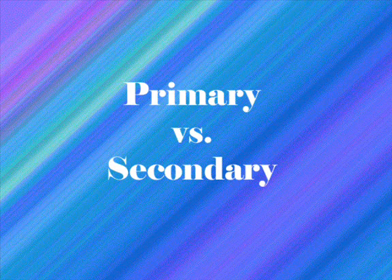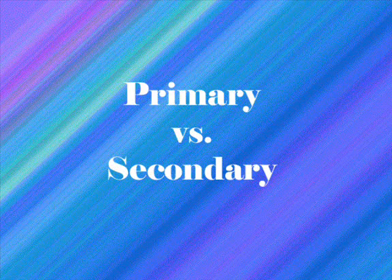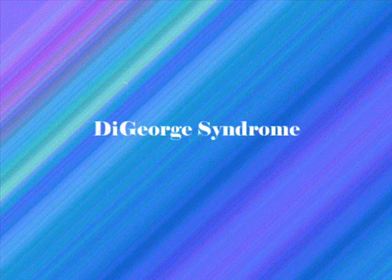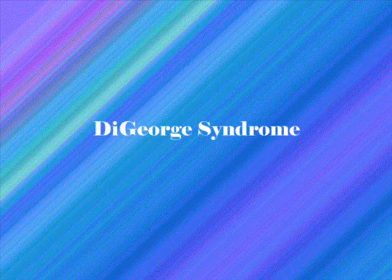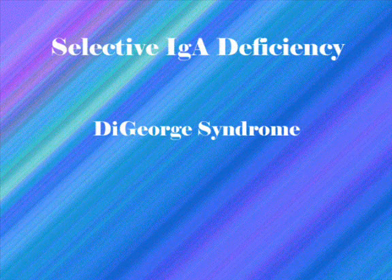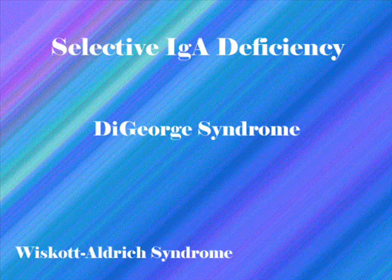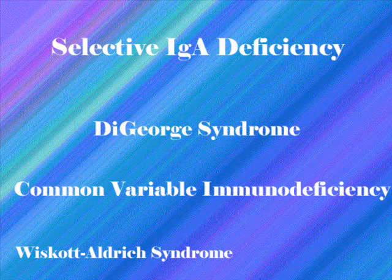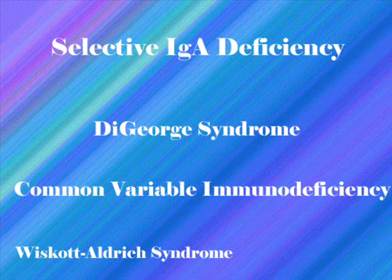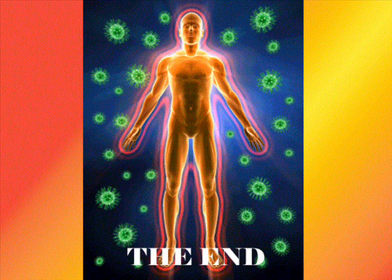Some immunodeficiency diseases include DiGeorge syndrome, selective IgA deficiency, Wiskott-Aldrich syndrome, and common variable immunodeficiency. This concludes my presentation on disorders of the human immune system. I hope you enjoyed it.